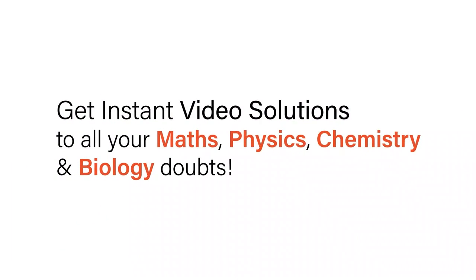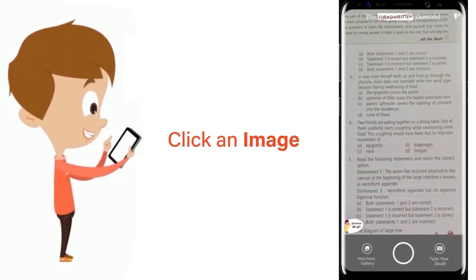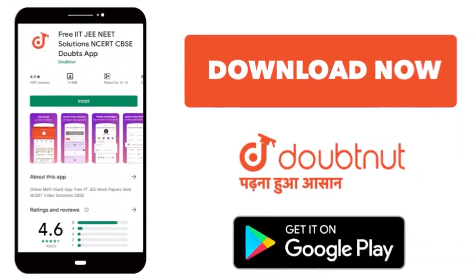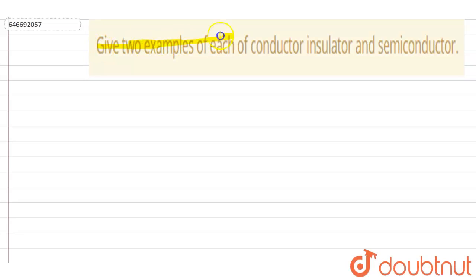With Doubtnet, get instant video solutions to all your maths, physics, chemistry and biology doubts. Just click the image of the question, crop the question and get instant video solution. Download Doubtnet app today. Give two examples of each: conductor, insulator and semiconductor.